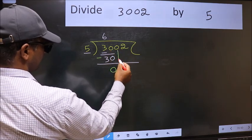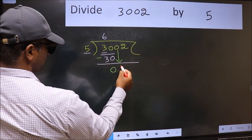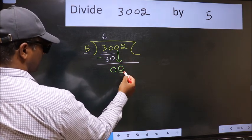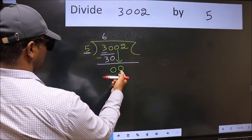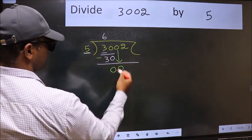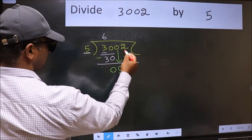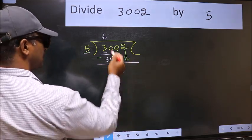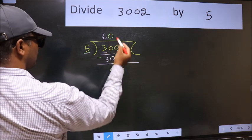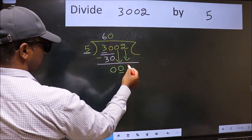After this, bring down the beside number. So 0 down. Now here we have 0 and here 5. 0 is smaller than 5. So we should bring down the second number. And the rule to bring down the second number is we should put 0 here. Then only we can bring down this number.